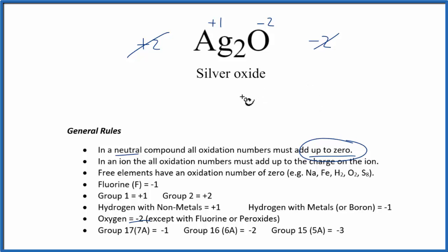We could set up an equation just to check and make sure we're right. We have two silver atoms, each silver atom is plus one, plus we have the one oxygen with an oxidation number minus two. Plus two and minus two gives us zero. So zero equals zero, that's a true statement.